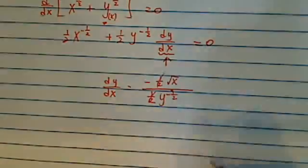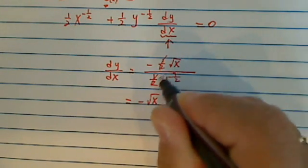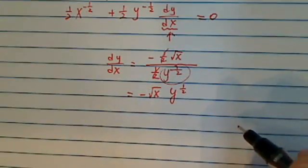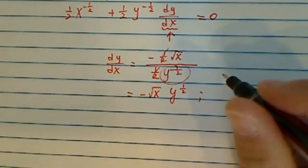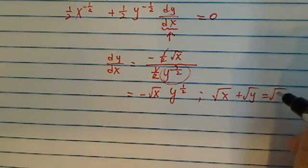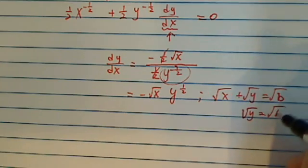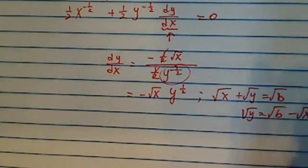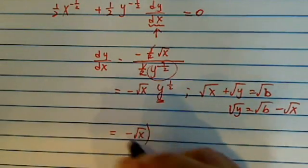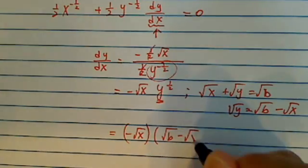This one cancels very nicely, and we have a negative radical x. Since this one is on a denominator, when I bring it up, it's positive. From here, a lot of students say, well, what do I do now? Well, we have to get back to where we had an equation for radical y. Radical y is equal to radical b minus radical x. So all we have to do is substitute it back in here. So I have negative radical x times radical b minus radical x.